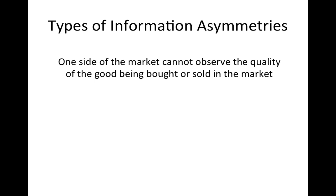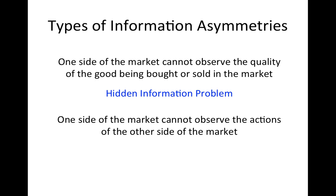There are two types of information asymmetries that can result in inefficient market outcomes. The first is when one side of the market cannot observe the quality of the good being bought or sold — this is called the hidden information problem. The second is when one side of the market cannot observe the actions of the participants on the other side of the market — this is called the hidden action problem.